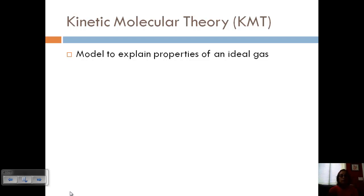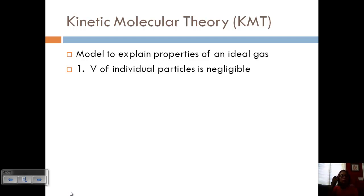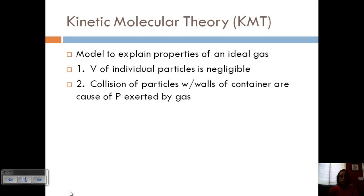KMT is a theory that uses a model to explain the properties of an ideal gas. We explain why certain variables are affected the way that they are. First, we're going to say that the volume of individual particles is negligible — we talked about this when we talked about partial pressures. Second, the collision of particles with the walls of the container is what causes the pressure exerted by the gas, so the more collisions you have, the higher the pressure.